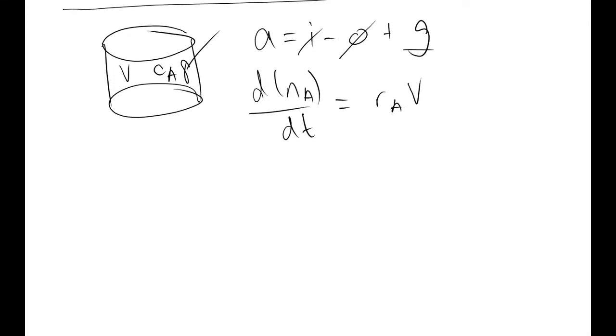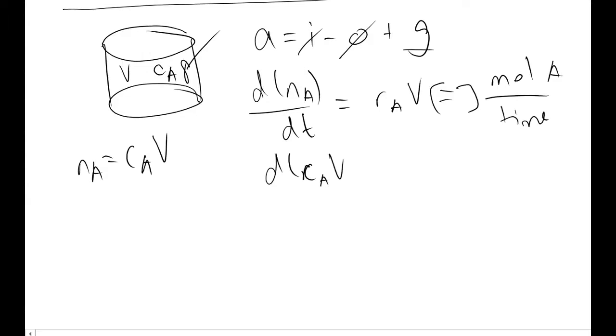At this point, to make sure we understand the dimensions, this has units of moles of A per time. We rewrite NA as CAV, and when we do this, we plug it into our equation here, d(CAV)/dt must be equal to rA times V.